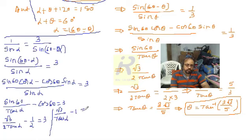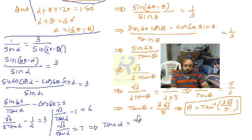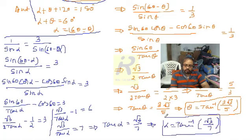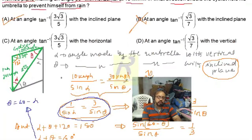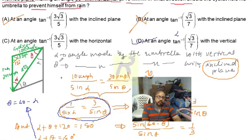Continuing the solution: tan alpha minus 1 equals 6, so root 3 divided by tan alpha equals 7, which gives tan alpha equals root 3 divided by 7. Therefore alpha equals tan inverse of (√3 / 7). So the angle made by the umbrella with the vertical is tan inverse(√3 / 7), and the cyclist should hold the umbrella at this angle. This option is correct.